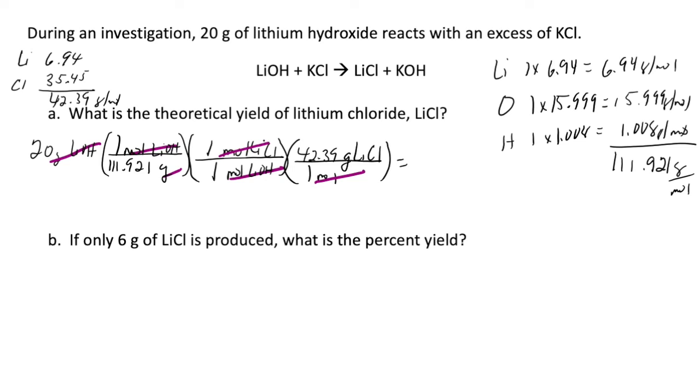And under perfect conditions, which is what theoretical yield means, under perfect conditions, I will produce 7.57 grams of lithium chloride.